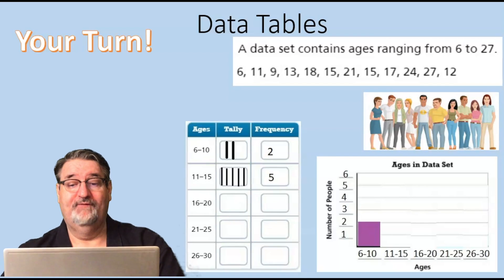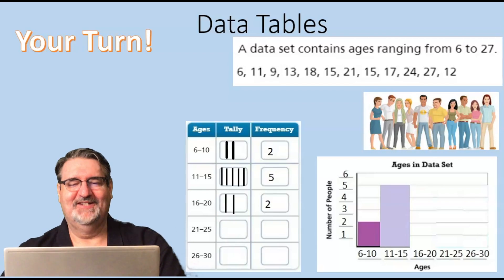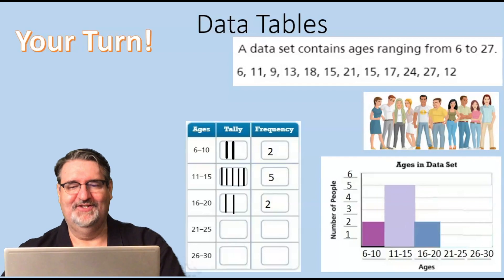From 11 to 15, there are 5. And so on our graph we show from 11 to 15 that there are 5. For 16 to 20, there are 2, and so we show that on the graph.